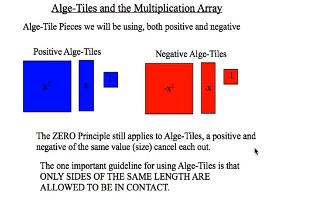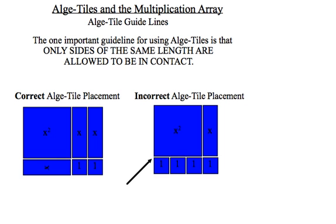So the zero principle still applies with alge-tiles. If we pair up an x squared and a negative x squared, that cancels off for zero. The one big rule we have to remember for alge-tiles when we're working with the area model is that the same length sides are the only ones that are allowed to touch. And what I mean by that is, if I was to put an x beside an x squared, this would be acceptable here because these have the same lengths.